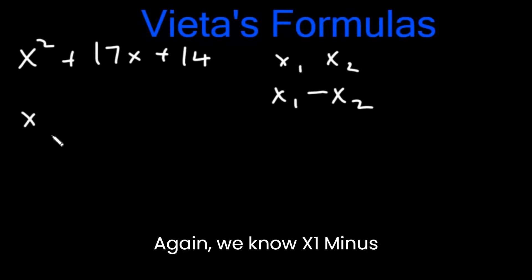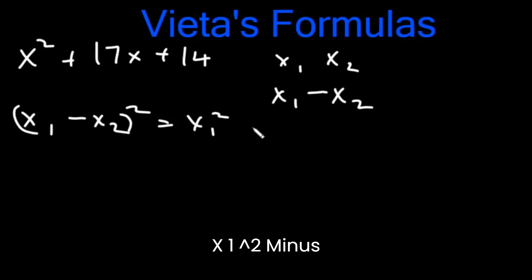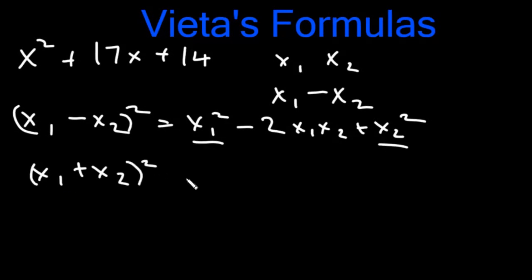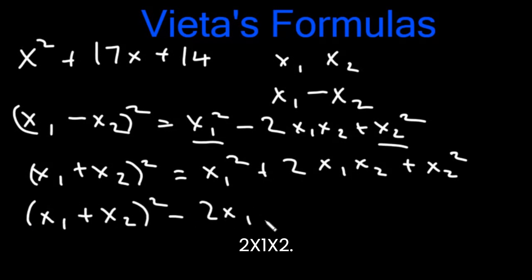Again, we know x1 minus x2 square is x1 square minus 2x1x2 plus x2 square. We can find x1 plus x2 square. x1 plus x2 square is x1 square plus 2x1x2 plus x2 square. So x1 plus x2 square minus 2x1x2 will give us x1 square and x2 square.